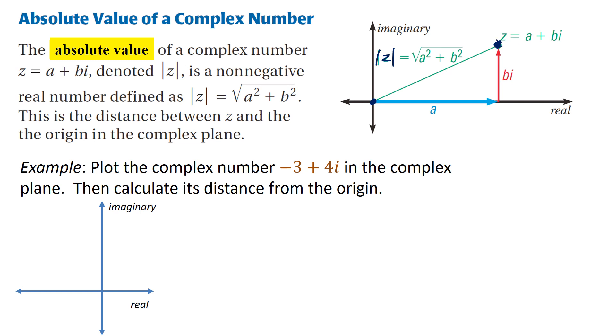Now example: we're going to plot the complex number negative 3 plus 4i in the complex plane, because we can't use a real plane, and then we will calculate its distance from the origin. The real plane is the a term, and the imaginary is the bi term.